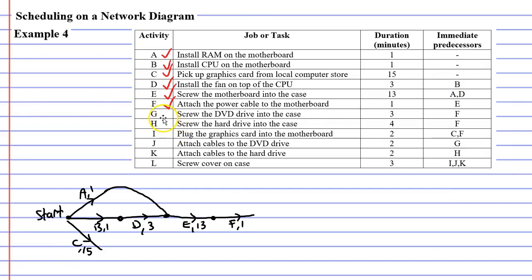Moving on to Activity G — we're going to screw the DVD drive into the case. You can't do that until Activity F is complete, so Activity G comes out from the end of Activity F. We can also see that Activity H comes after Activity F, so Activity H also comes out from that point. Activity G has a duration of 3, and Activity H has a duration of 4.